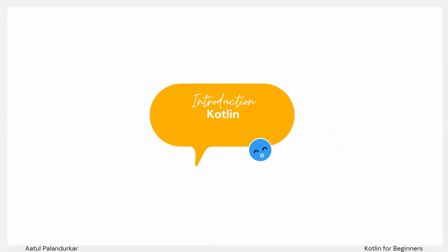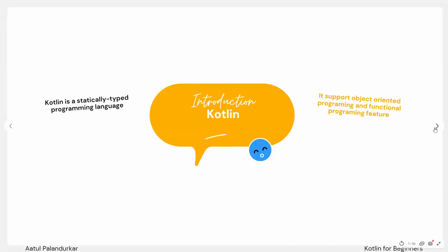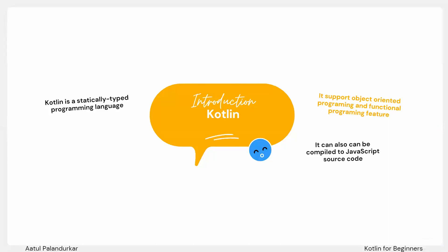Let's start with the basic introduction to Kotlin. Kotlin is a statically typed programming language, meaning we have specific syntaxes we must follow. It's more like Java, not like Python, but the syntaxes are very familiar. It supports both object-oriented programming and functional programming features. If you know Java or Python, you'll find Kotlin really very easy.